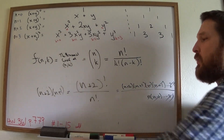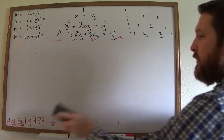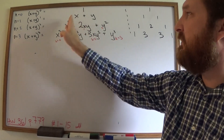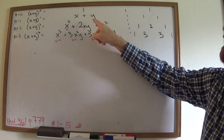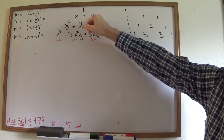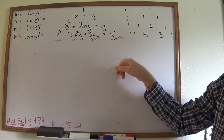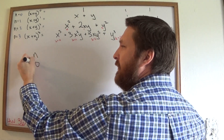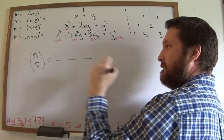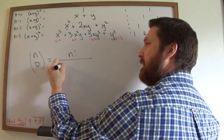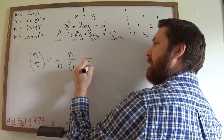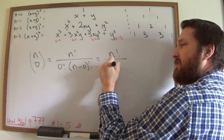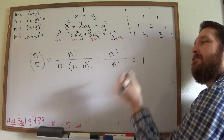Here's a cool fact: n choose 0 for any n. That's n! / (0! × n!) = n!/(1 × n!) = 1. So it doesn't matter how large n is — n choose 0 is always 1. And n choose n: n! / (n! × 0!) = 1. So both the first and last entries in every row of Pascal's Triangle are always 1.